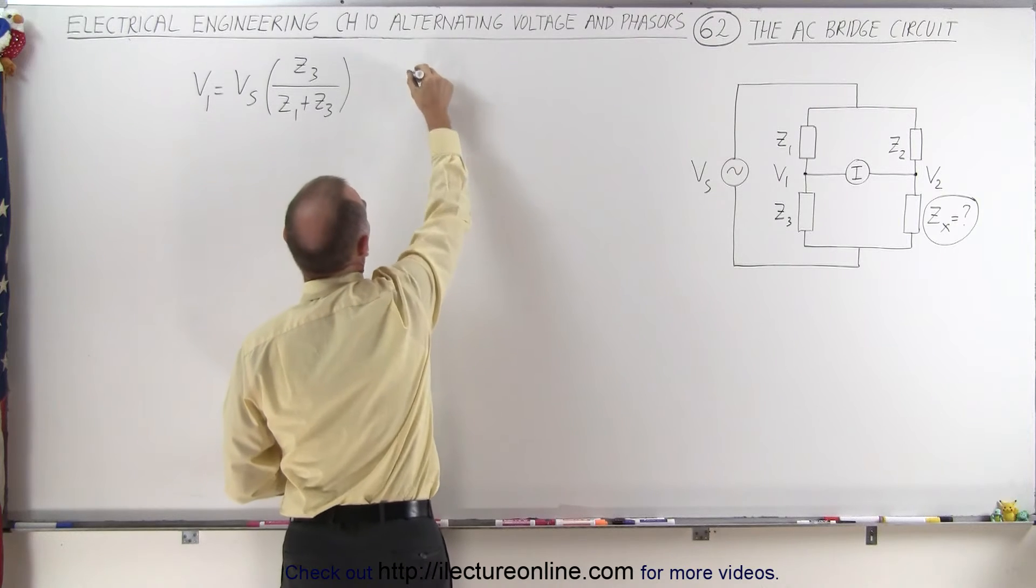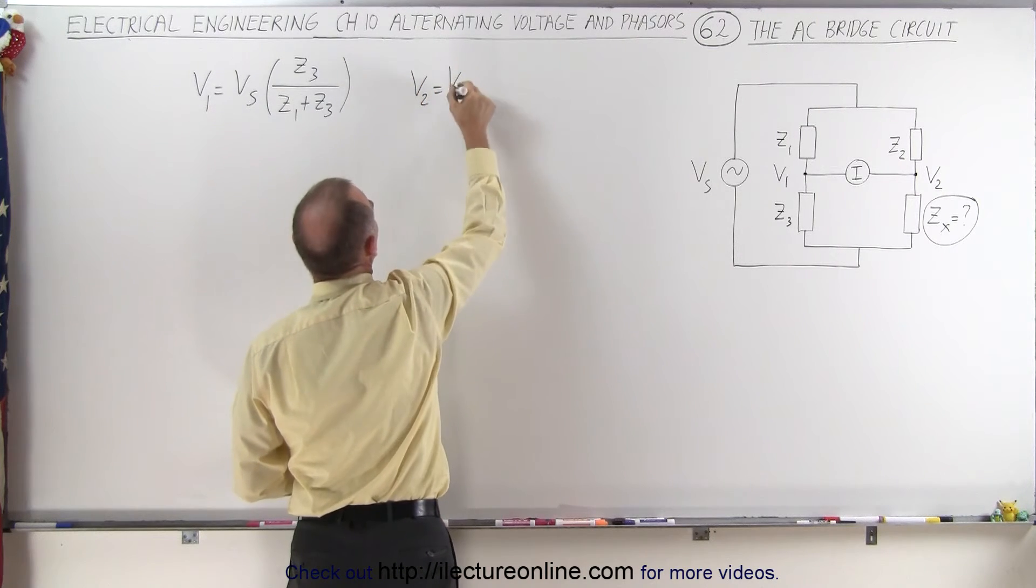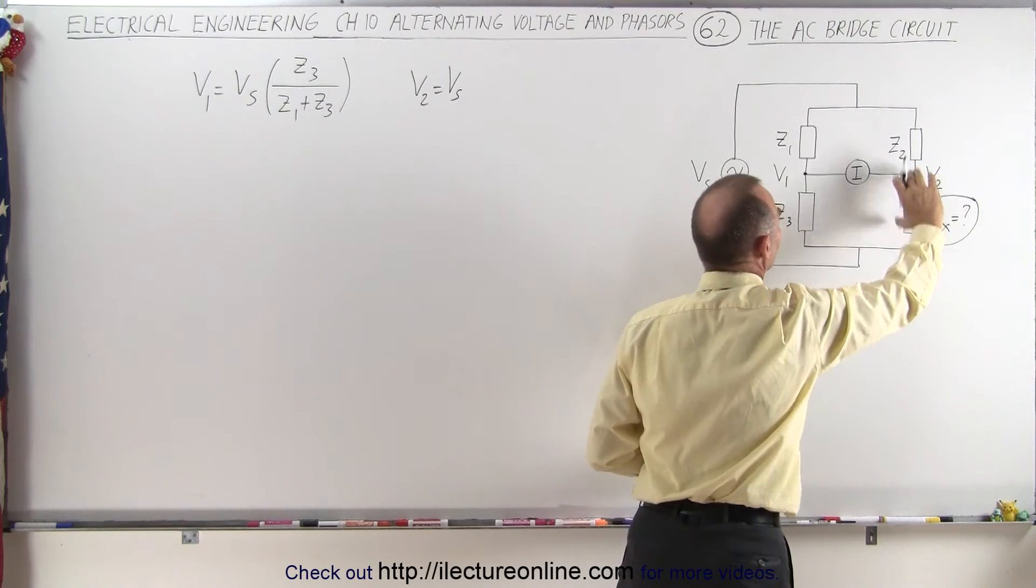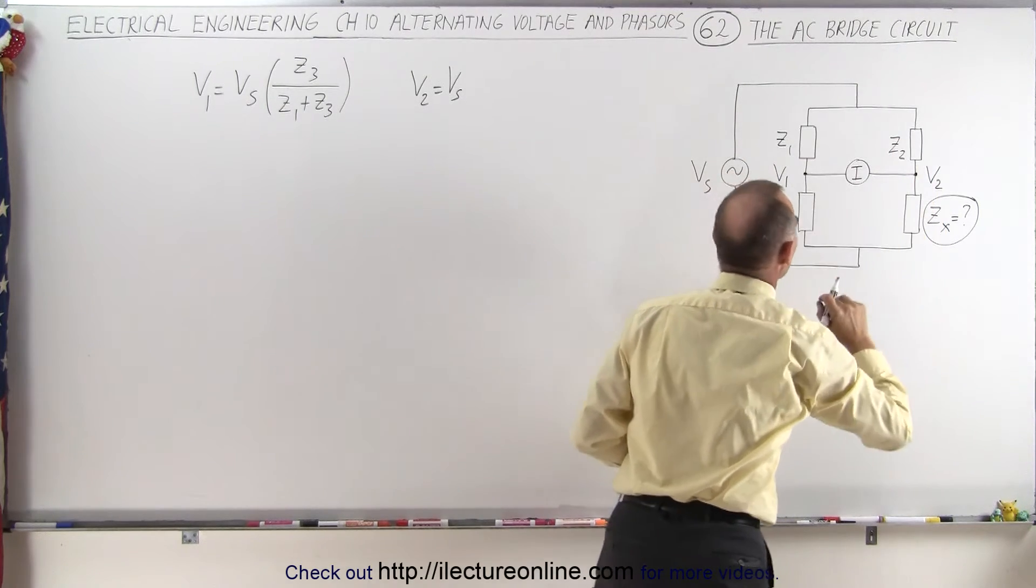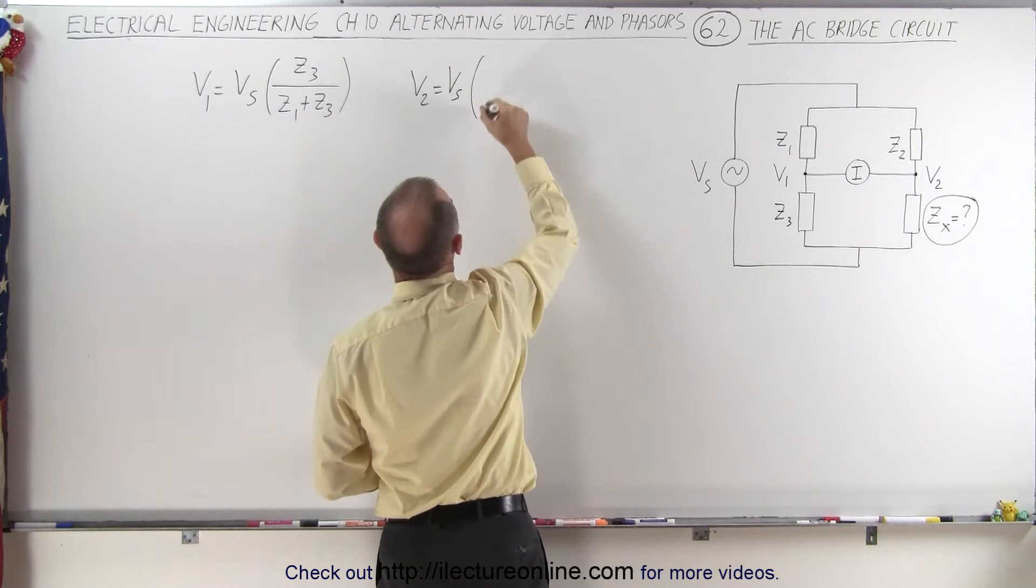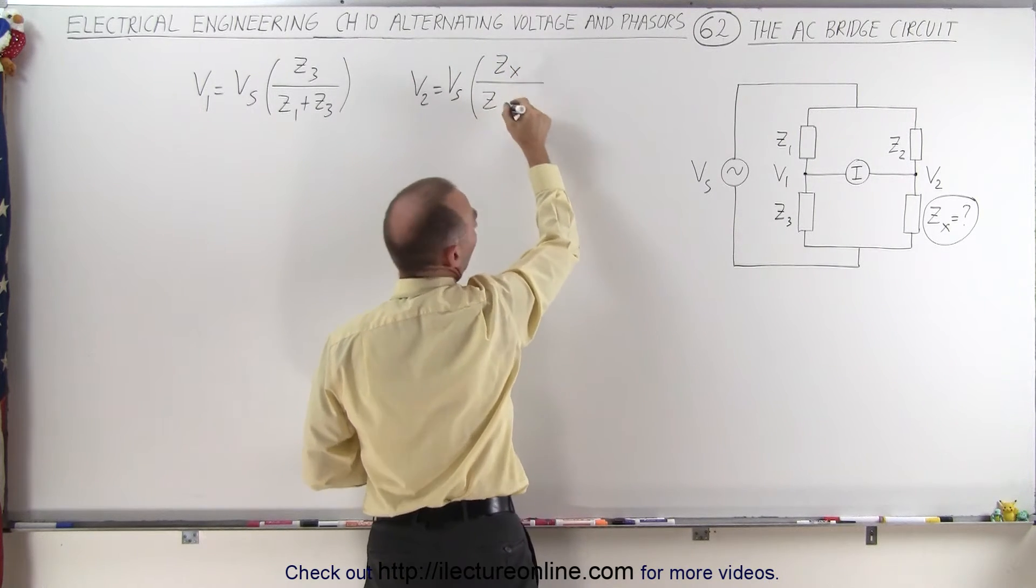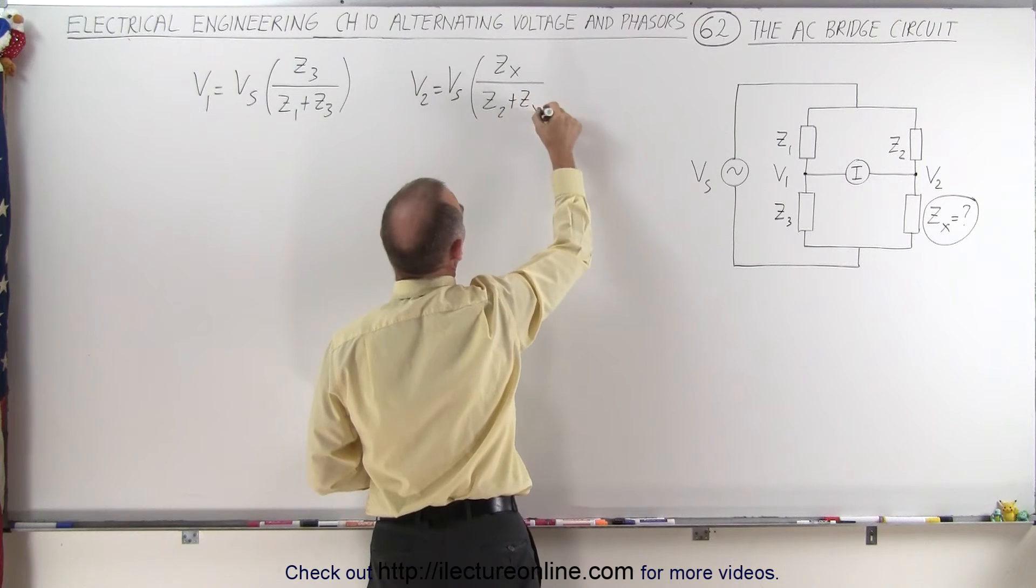We can do the same for V2. V2 equals the source voltage times the ratio of the voltage drop across here divided by the voltage drop across both. In this case, that's Zx divided by Z2 plus Zx.